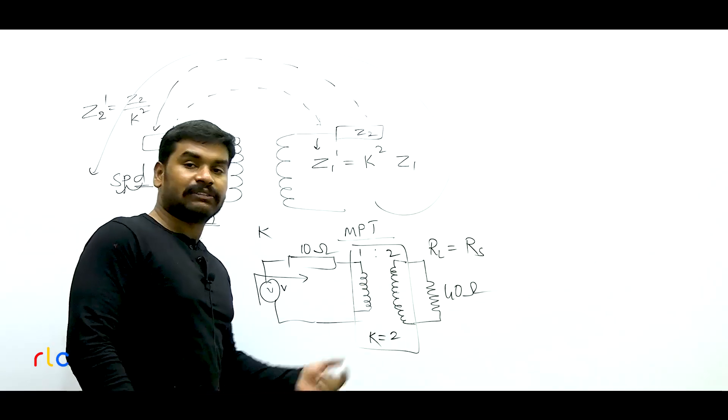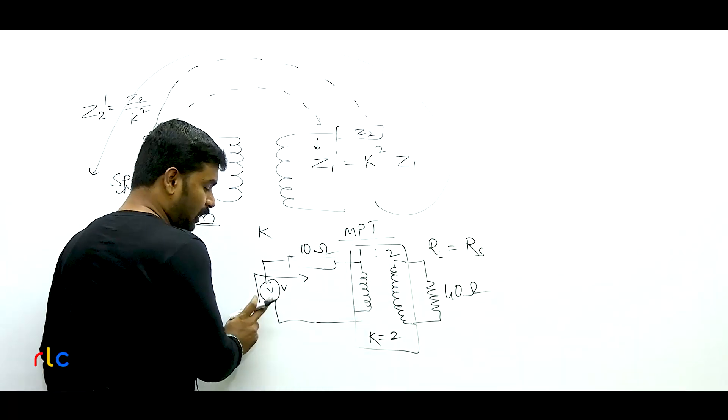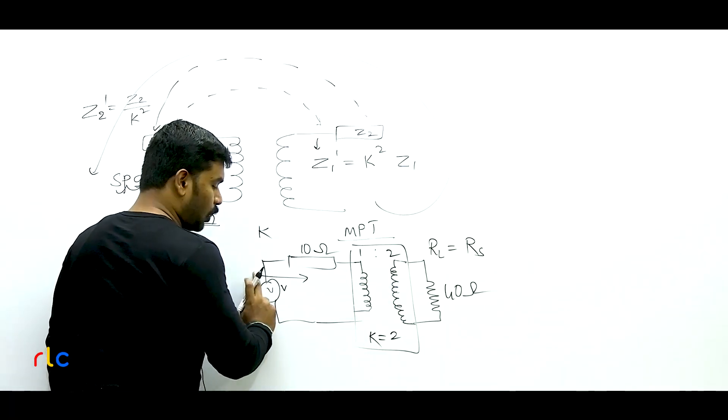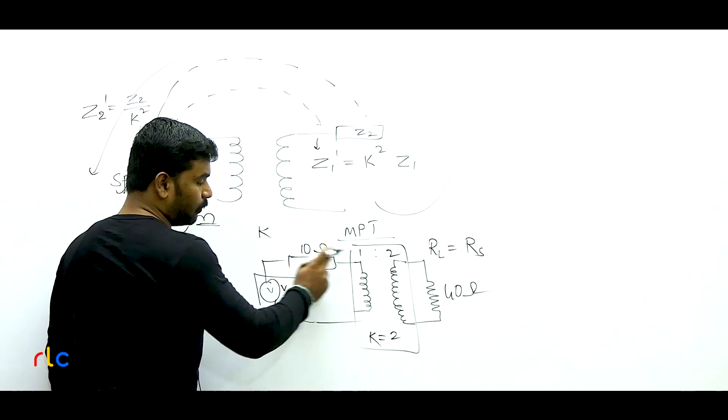Next question: Distribution transformers are designed to have — Option A: core loss PC greater than full load ohmic loss POH; Option B: PC less than POH; Option C: core loss equal to ohmic loss; Option D: PC negligible compared to ohmic loss.